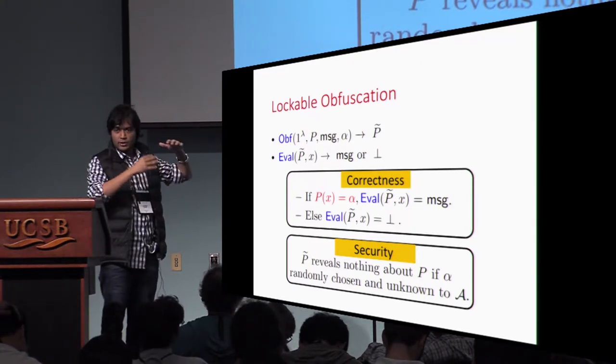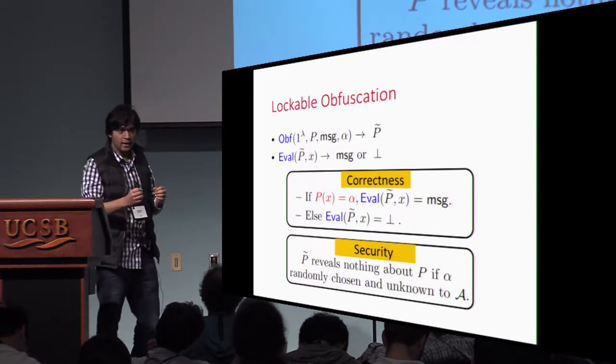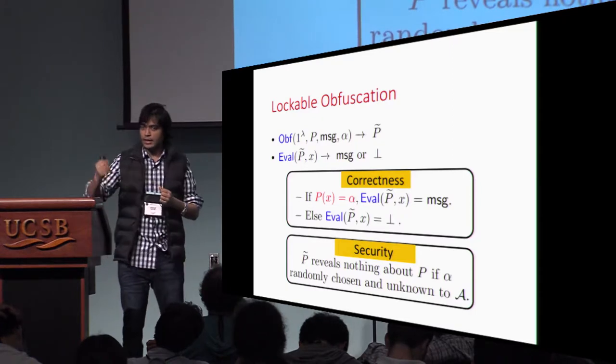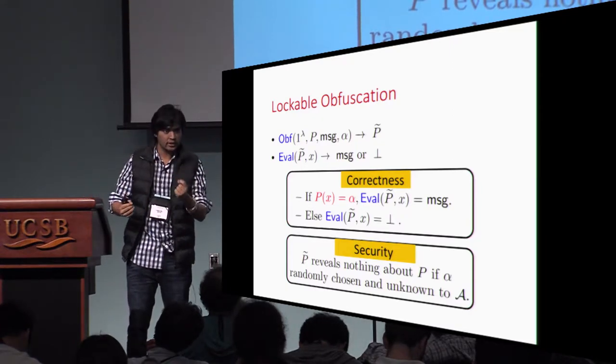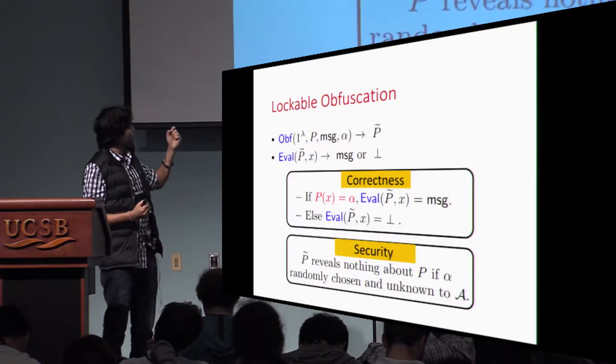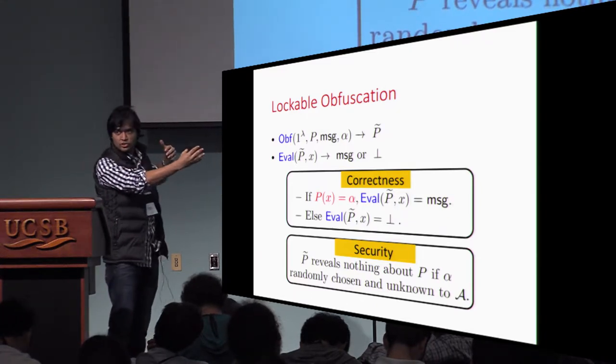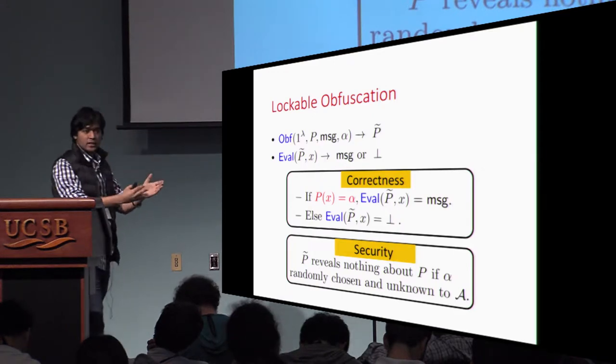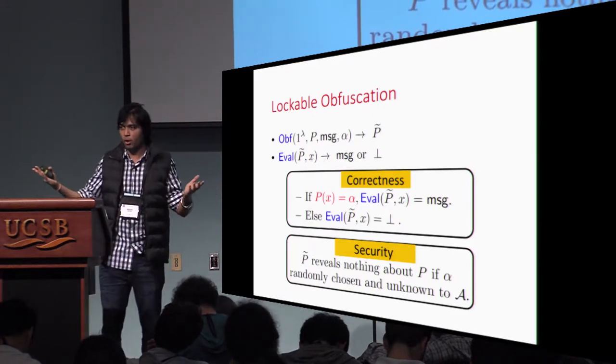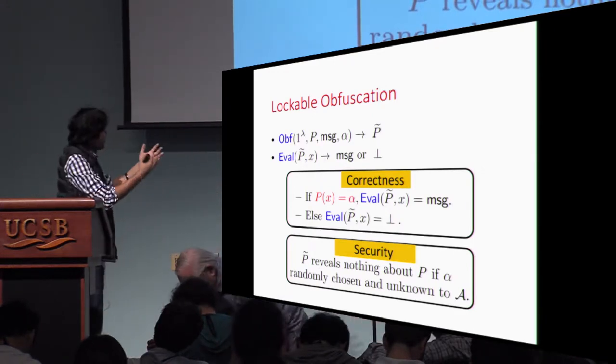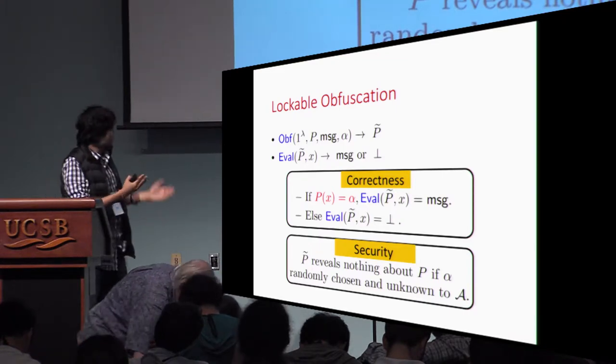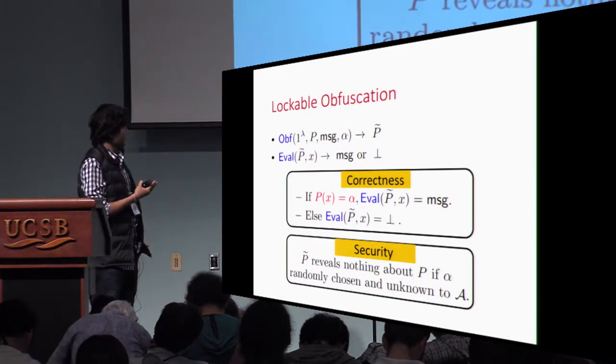The correctness condition that we require from a lockable obfuscation scheme is that if you try to evaluate the obfuscated program on an input x, such that output of the program that was obfuscated on the input matches the lock string alpha, then you get the message. Otherwise, the evaluation algorithm just outputs the special reject string.